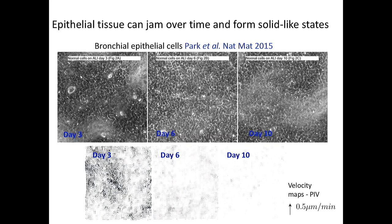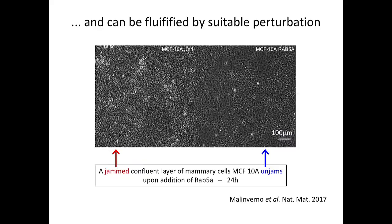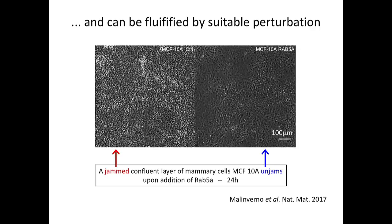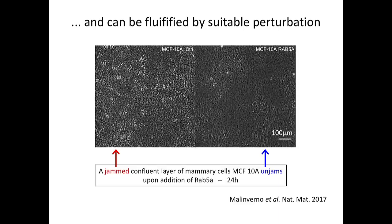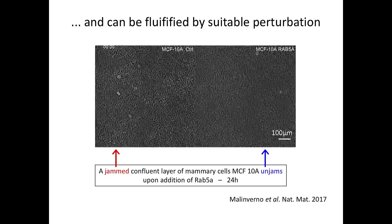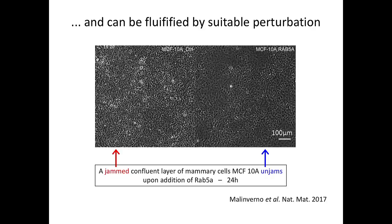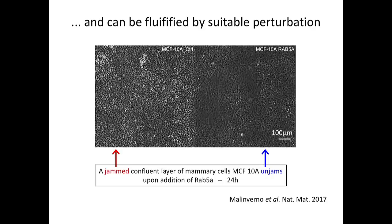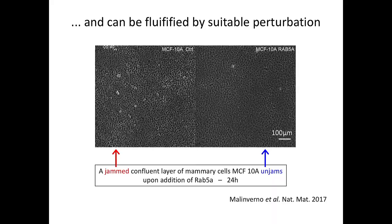Cell layers can jam over time. This is an example of a confluent tissue: there are no gaps between cells, so the packing fraction is not really changing. Something else is driving the jamming. In another example—a confluent layer of breast cells—the layer to the left is essentially jammed. But when you add a protein called RAB5A, which is associated with endocytosis, the tissue becomes a fluid and exhibits large-scale coherent flow-like motions, from the group of George Oshita at the University of Milano. So tissues can tune themselves between solid-like and liquid-like states.